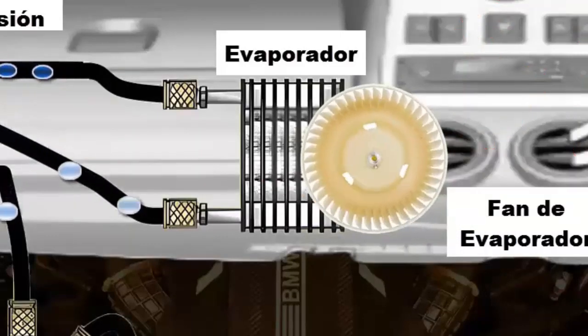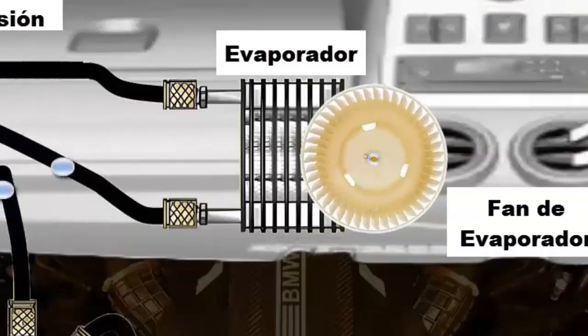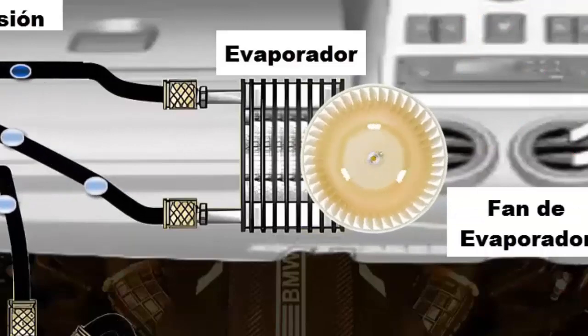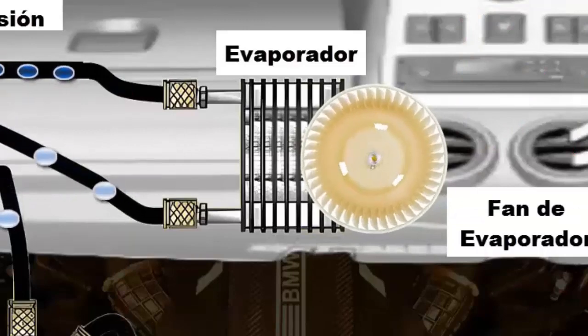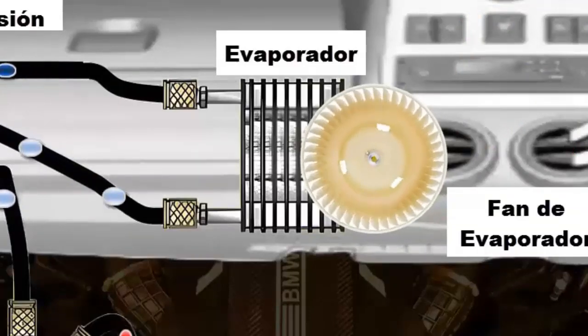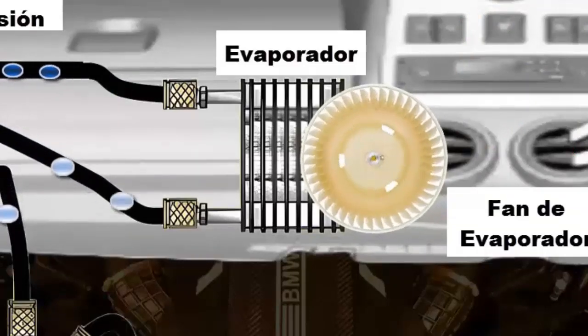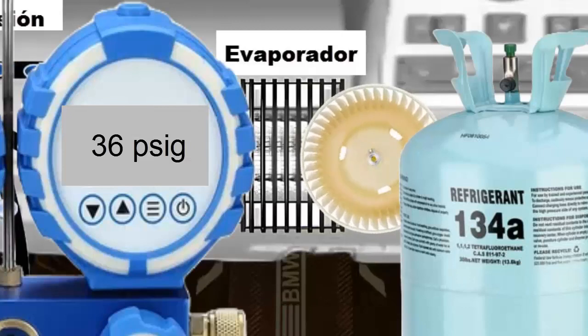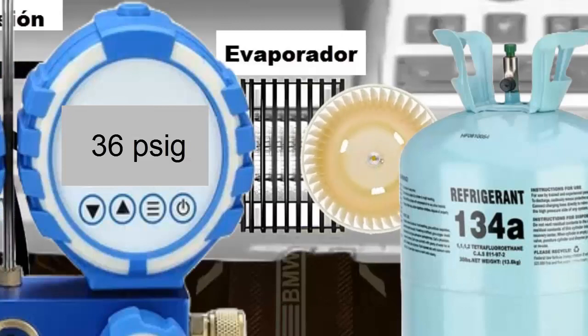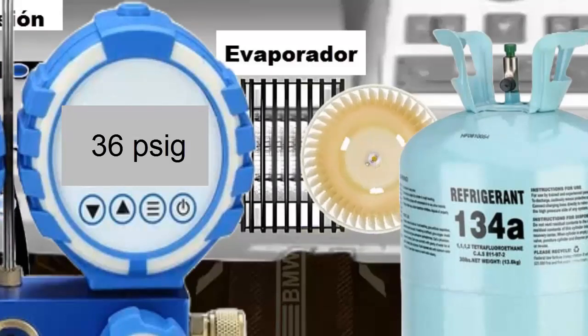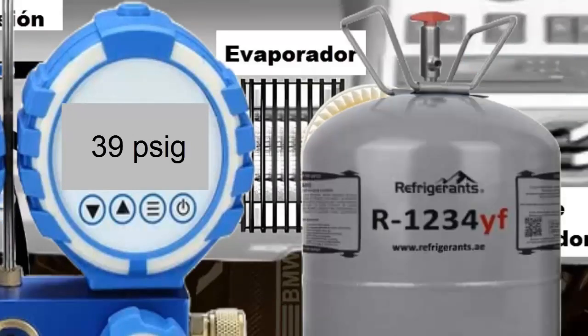In the automotive air conditioning evaporator, with the vehicle idling, the pressure of R134A is 36 pounds per square inch, while for R1234YF it is 39 pounds per square inch.